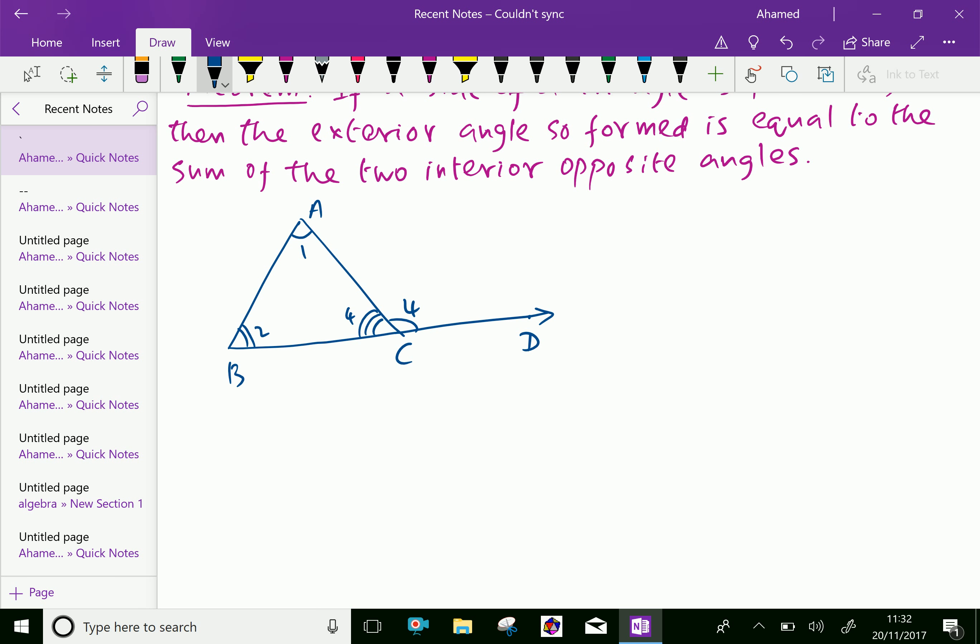Now, the given is: in triangle ABC, if the side BC is extended to point D.